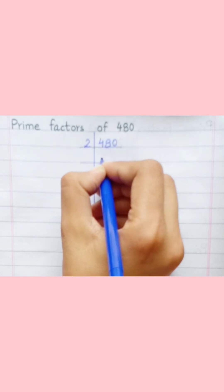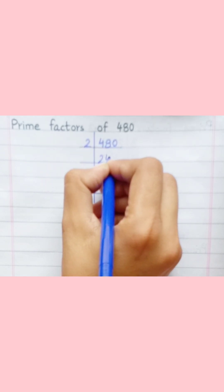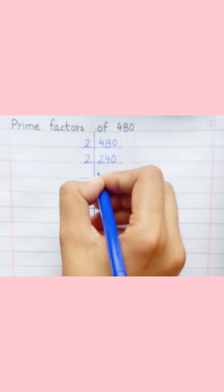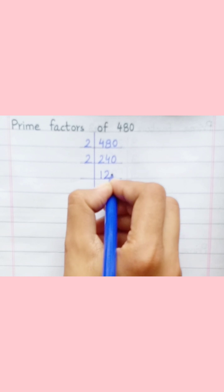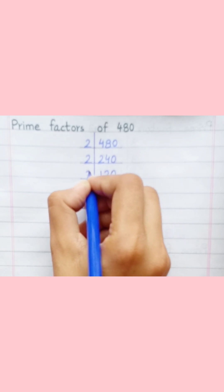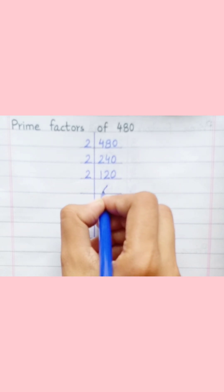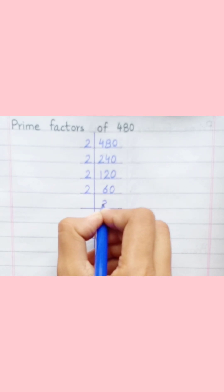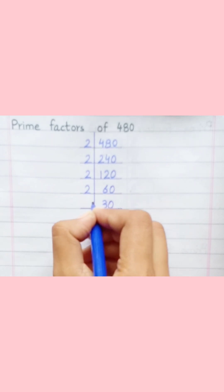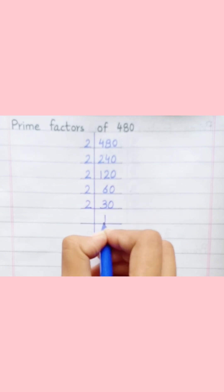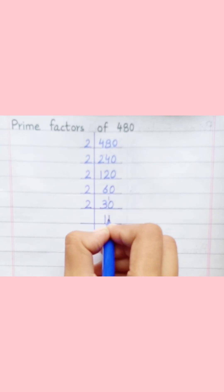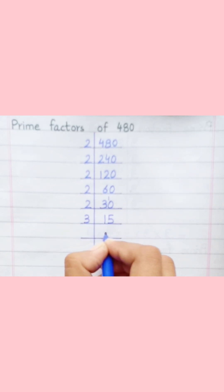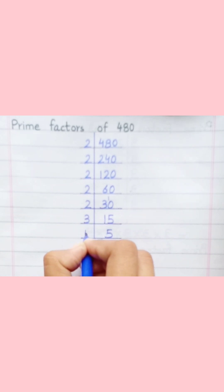Two twos are four. Two fours are eight. Two zeros are zero. Two ones are two. Two twos are four. Two zeros are zero. Two sixes are twelve. Two zeros are zero. Two threes are six. Two zeros are zero. Two ones are two. Two fives are ten. Three fives are fifteen. Five ones are five.